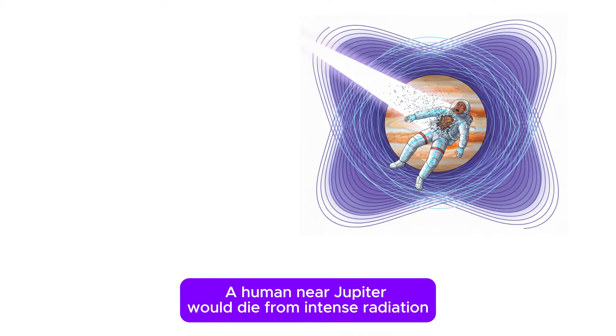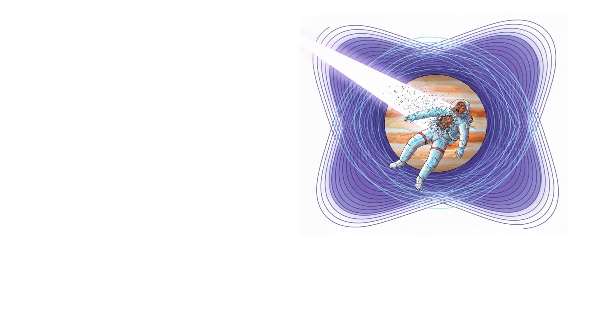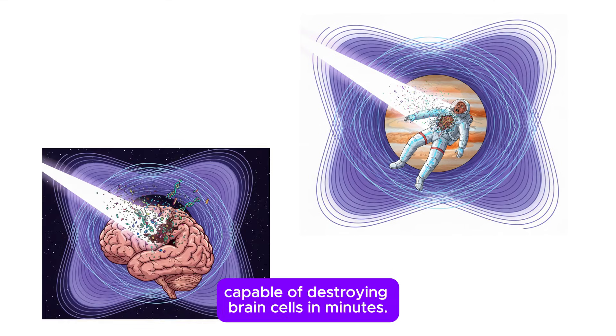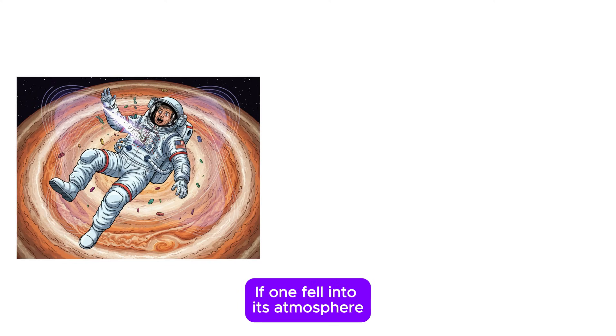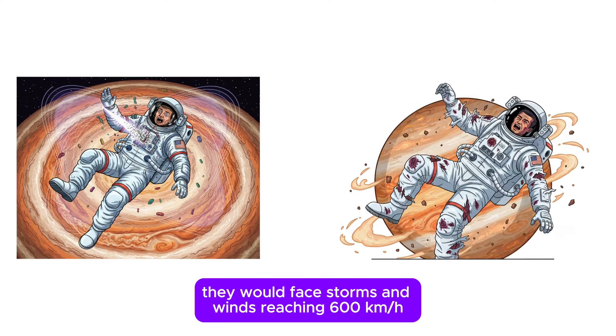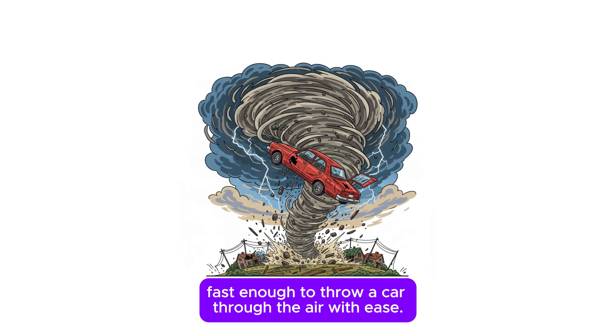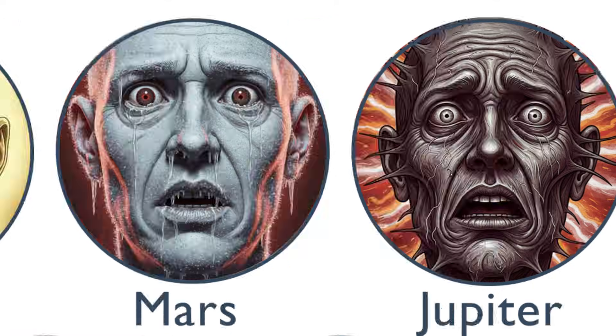A human near Jupiter would die from intense radiation, capable of destroying brain cells in minutes. If one fell into its atmosphere, they would face storms and winds reaching 600 kilometers per hour, fast enough to throw a car through the air with ease.